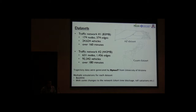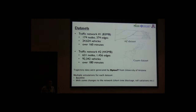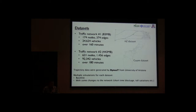We tested our method on two networks. One is the Arizona dataset. For the Arizona data, we have about 25,000 vehicles and over three hours of simulation in real time. The data was generated by the University of Arizona using an agent-based realistic simulation tool. We have multiple simulations for each design: one is the baseline, and others have changes in the network, such as short-term blockage or added toll stations. Our goal is to visualize the differences between the baseline and the changed network.